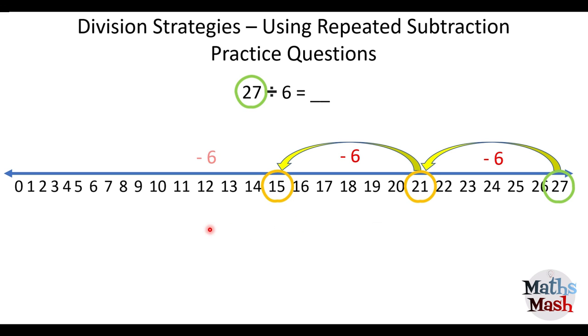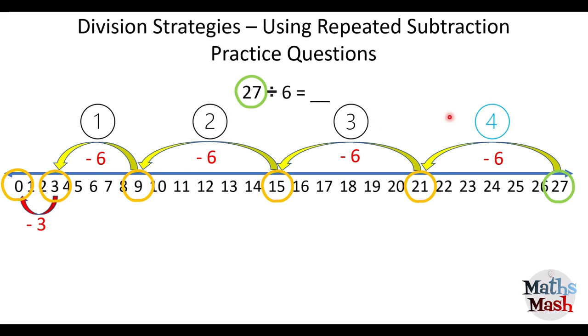15, another six. 9, another six. 3. But again, I don't have enough left in order to get to zero to make another group of six. So I'm going to subtract three. Okay. That gets me to zero. So how many jumps of six do I have? I've got four jumps of six. And I've got the three remainder. So it's going to be four remainder three.